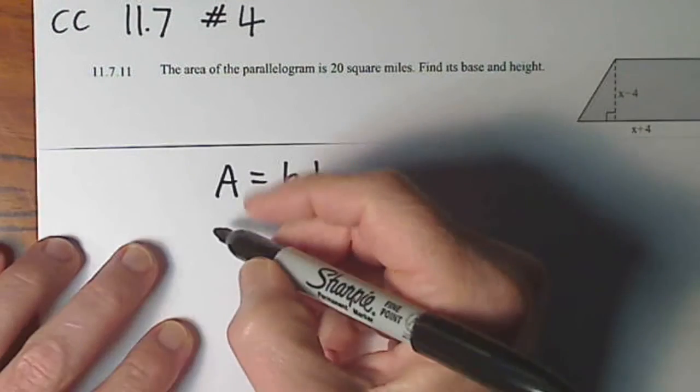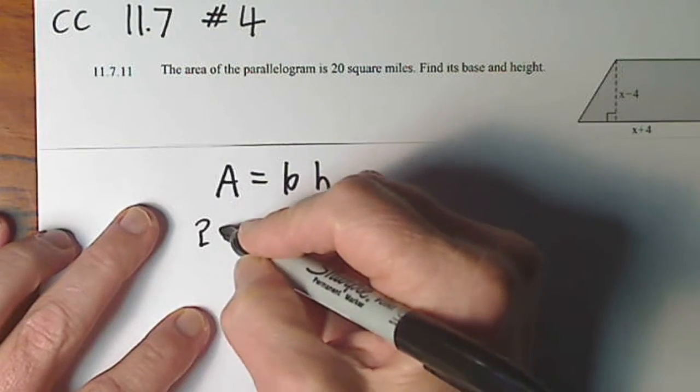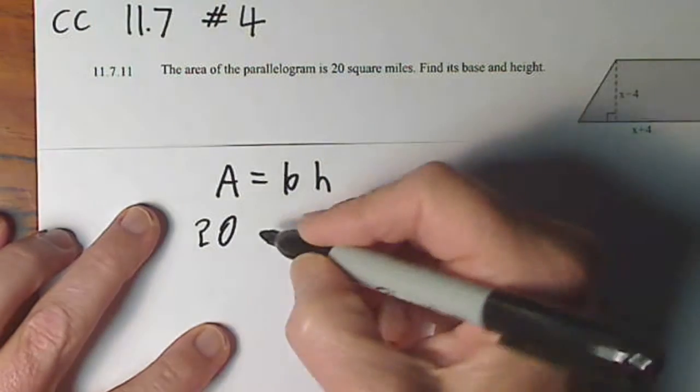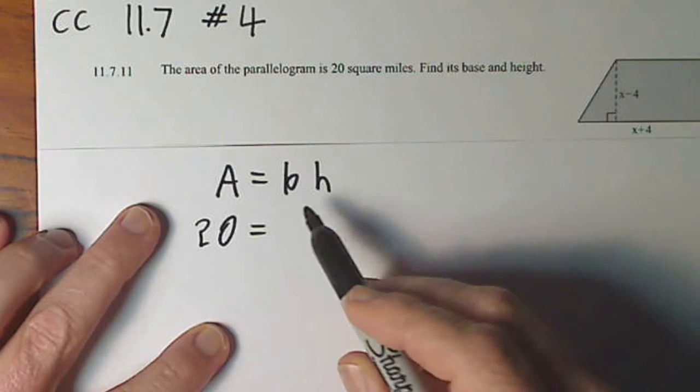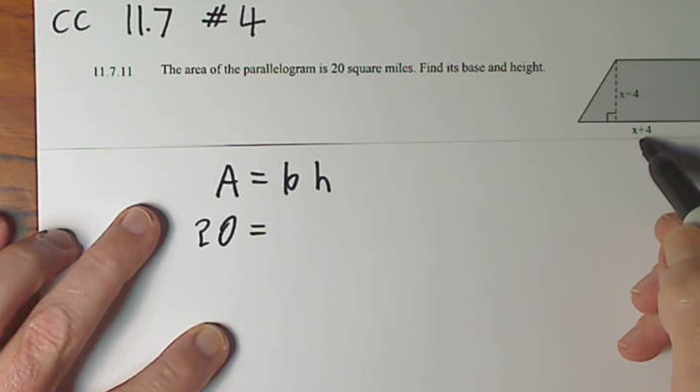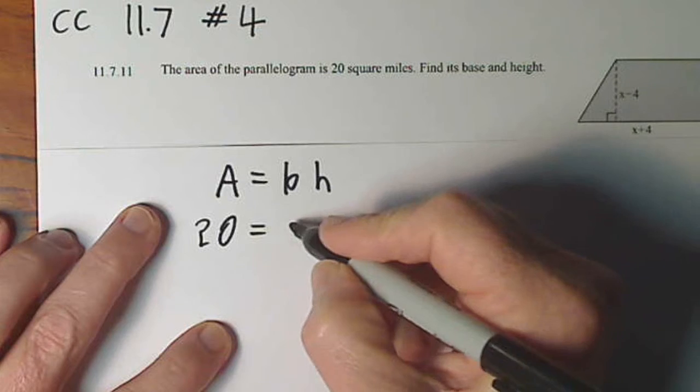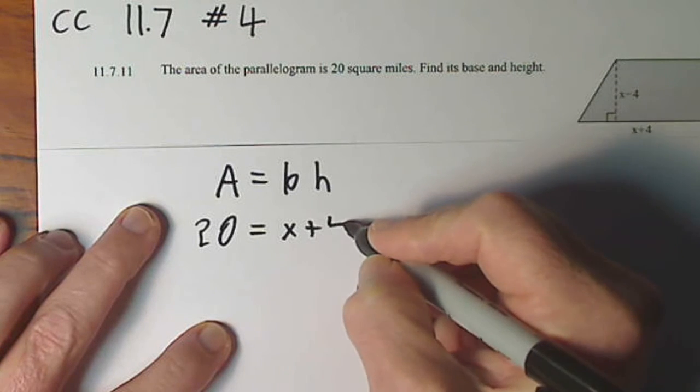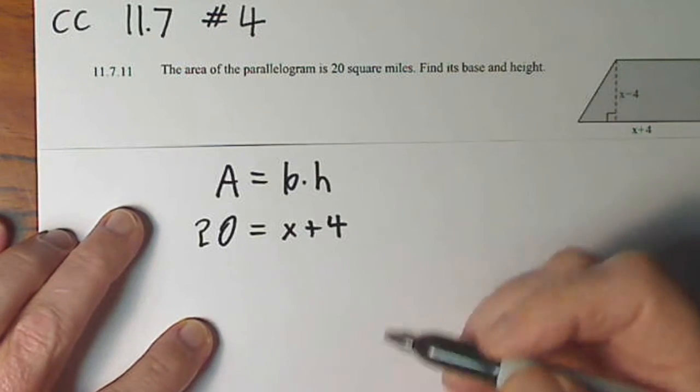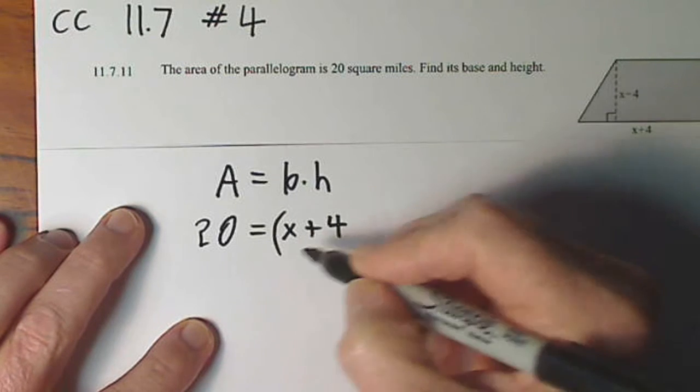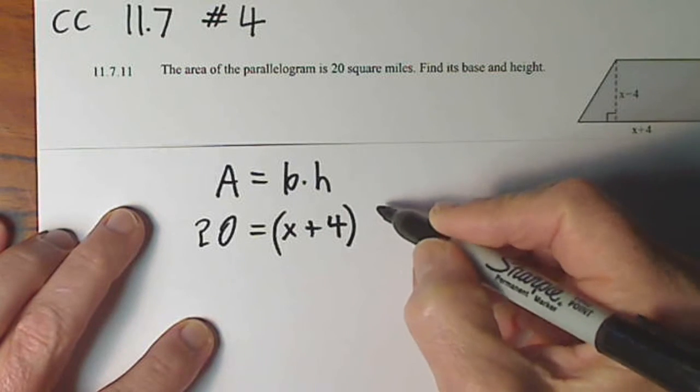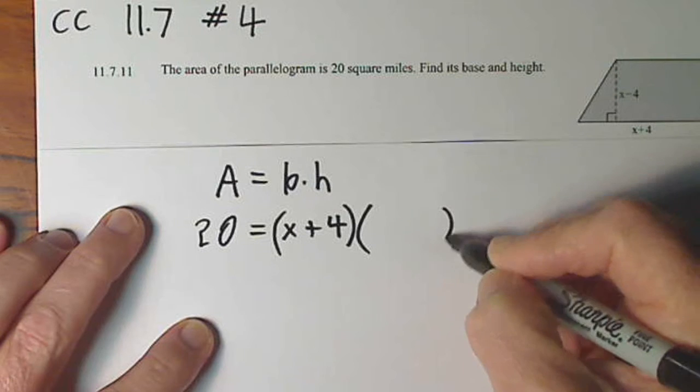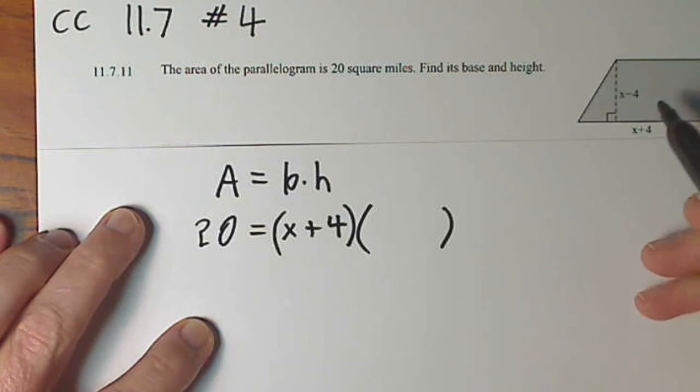So for area, we plug in 20. For base, we plug in x plus 4. And notice the base and the height are to be multiplied. So I'm going to need to put these in parentheses. And it's probably hard to see, but the height is given as x minus 4.